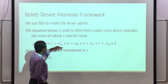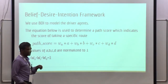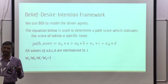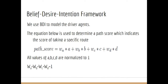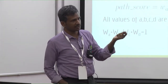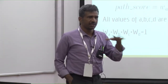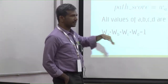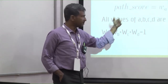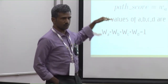We developed a path score to help the agent decide whether to follow the police-given path or choose its own path. These path score factors were determined through trial and error — we cannot fully justify why only these specific factors and not others, but they were arrived at empirically.